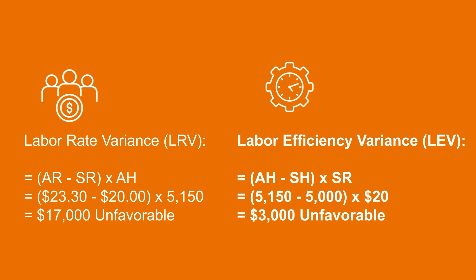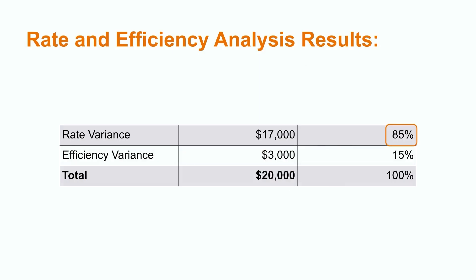Labor efficiency variance is the difference between the labor hours that were actually used compared to the total hours that should have been used based on the budget. In this case, that would be 5,150 actual hours minus 5,000 budgeted hours, multiplied by the budgeted hourly rate of $20 per hour, resulting in a $3,000 unfavorable variance. The total $20,000 unfavorable direct labor variance has been broken down across both rate and efficiency variance, with 85% of the variance originating from the rate difference. This helps the company determine whether it was the hourly wage rate or total hours that created the majority of the issue.